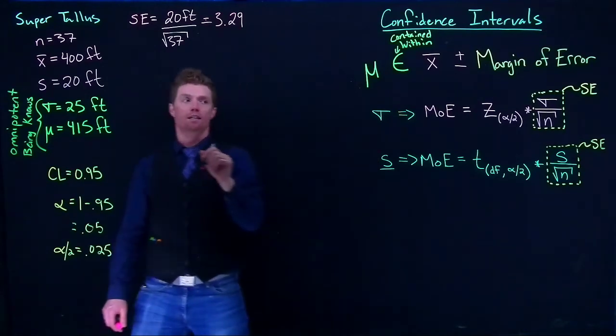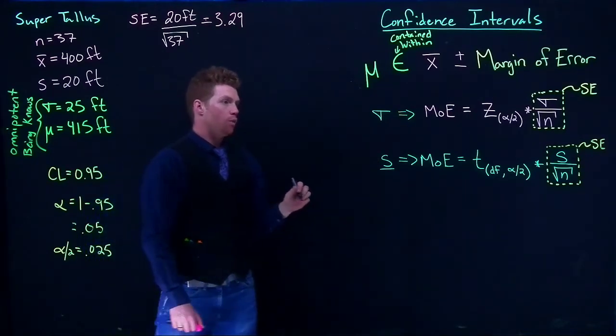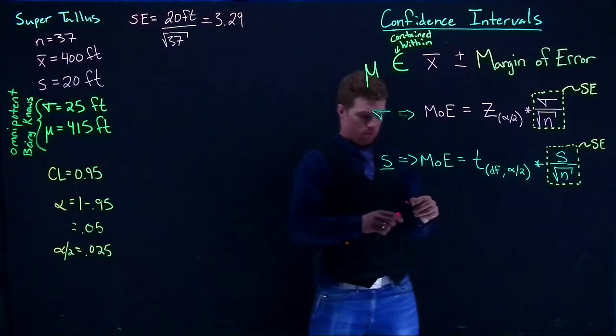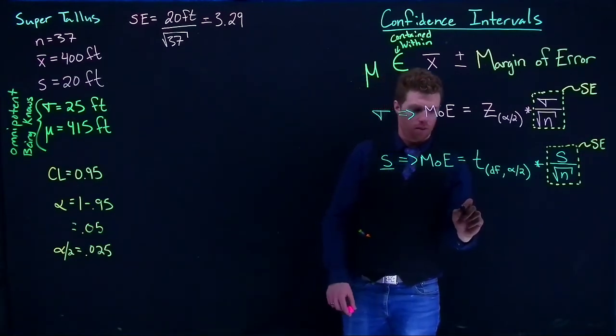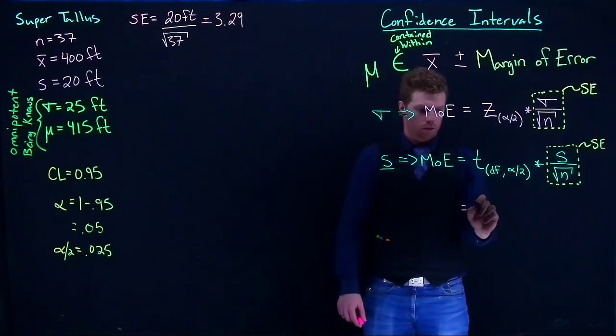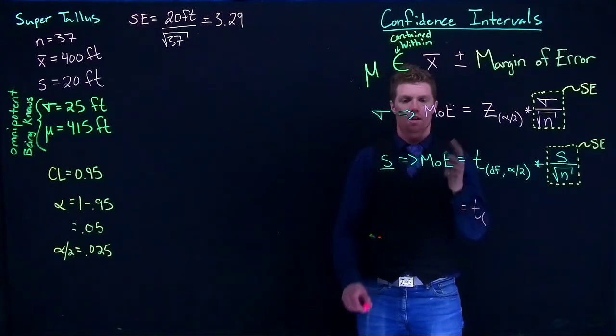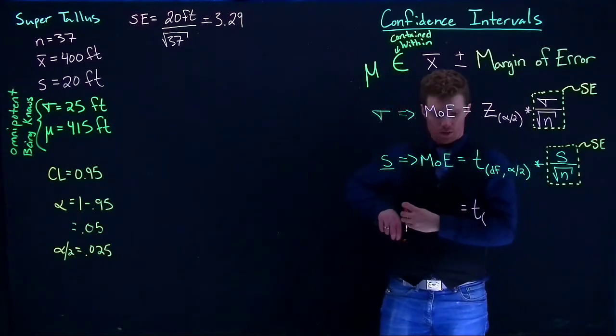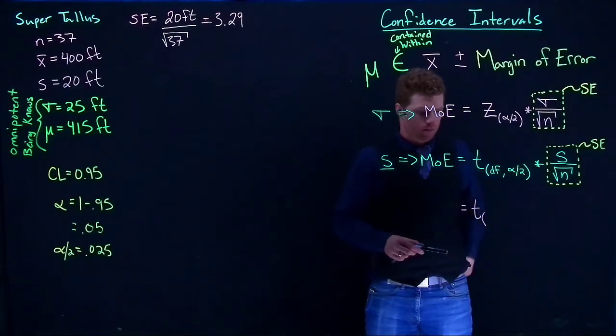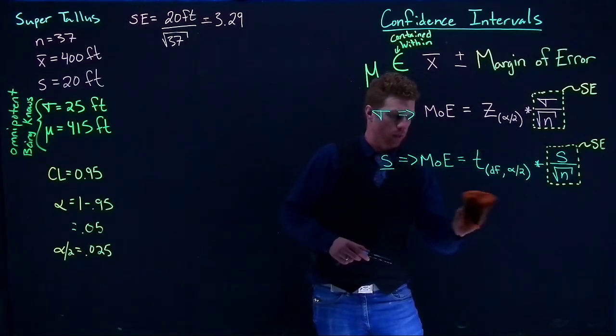Okay, let's figure out our T value now. So when we do this, let me write these out with values put in. So it's going to be T, I need to know degrees of freedom. Sorry, I haven't put that down yet.